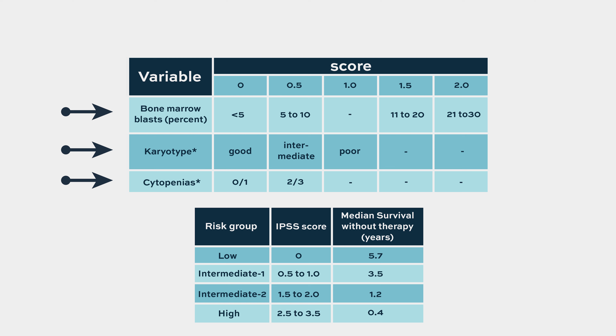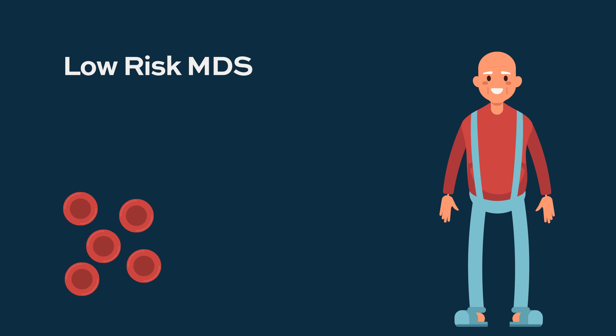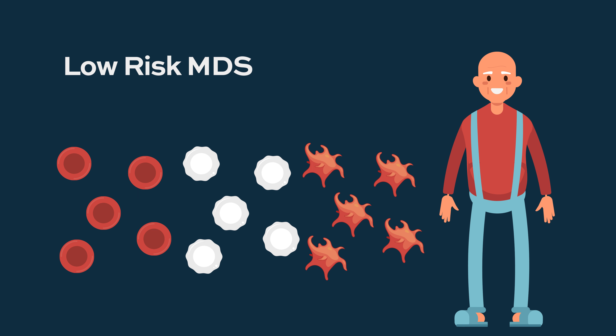Low risk disease most of the time presents with either anemia, neutropenia, or low white cell count. Sometimes patients may not have any symptoms — they just get labs and their blood work shows low counts, and then the bone marrow shows dysplasia or MDS.